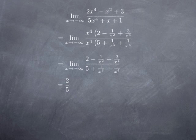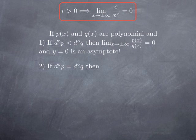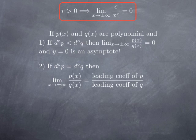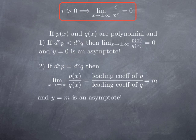More generally, if we redo the same procedure with two polynomials of the same degree, we factor the highest power of x at the top and at the bottom—those powers cancel. We're left with a constant plus terms going to 0 divided by another constant plus terms going to 0. These constants are the leading coefficients of the top and the bottom. So the limit of the quotient is the ratio of the leading coefficients. Let's call that number m. The geometric interpretation is that the horizontal line y = m is a horizontal asymptote.